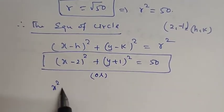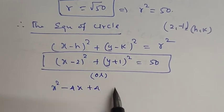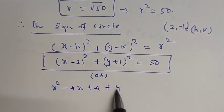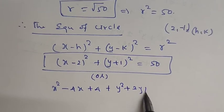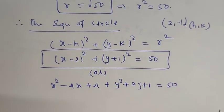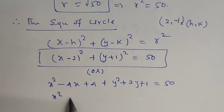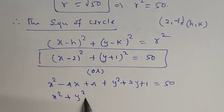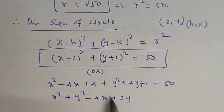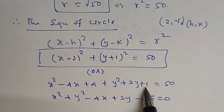Expanding: x square minus 4x plus 4, plus y square plus 2y plus 1, is equal to 50. So 4 plus 1 is equal to 5.